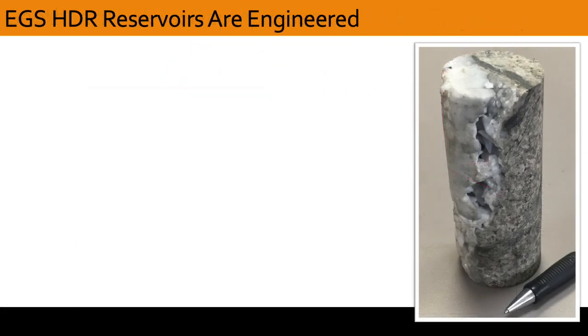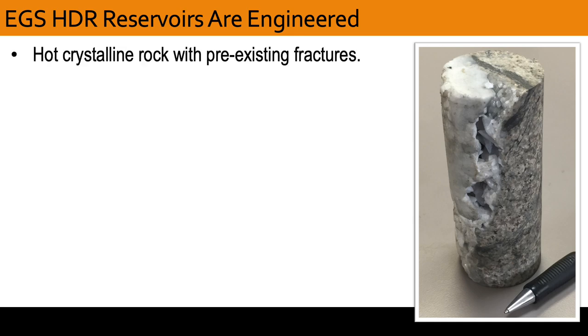Let's now summarize the key attributes of EGS engineered reservoirs in hot, dry rock. They require large volumes of hot crystalline rock, such as granite, that have pre-existing fractures but are impermeable.